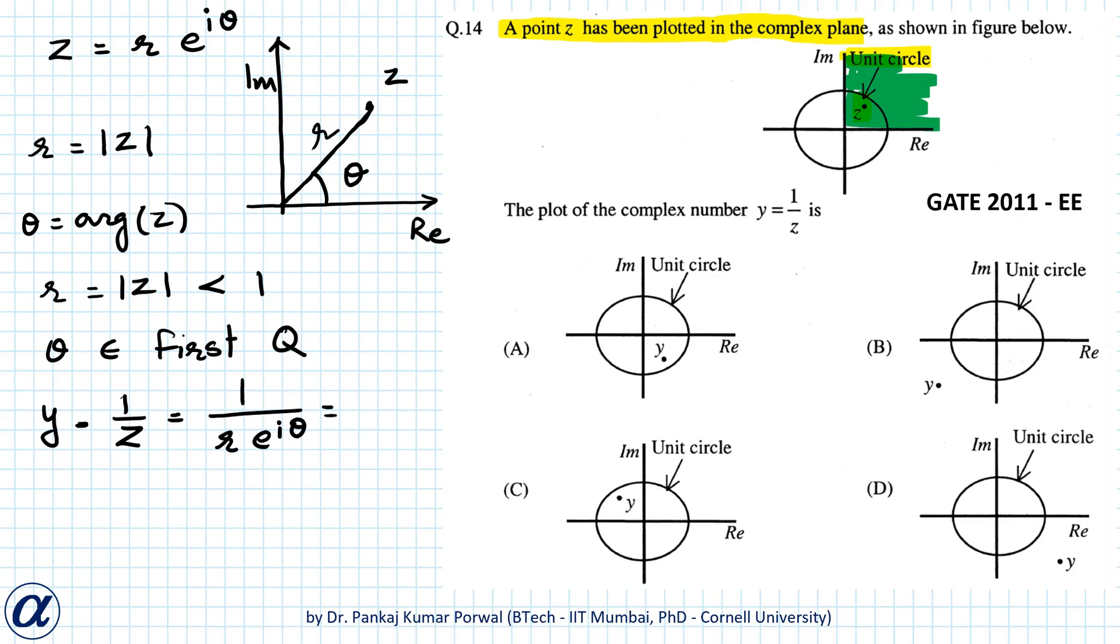So for y, mod y will be equals to one upon r, and because r is less than one, one upon r will be greater than one.